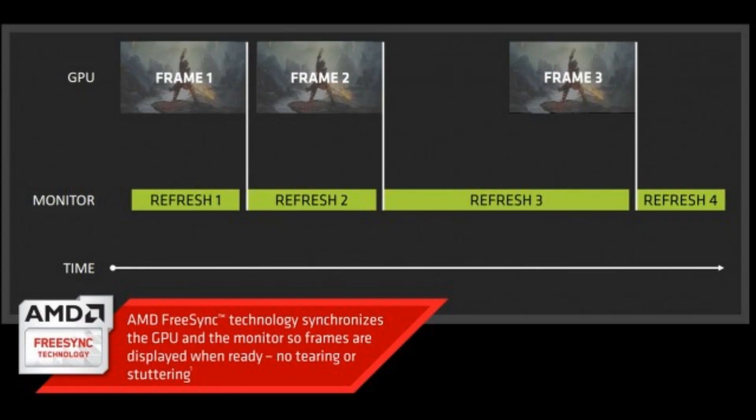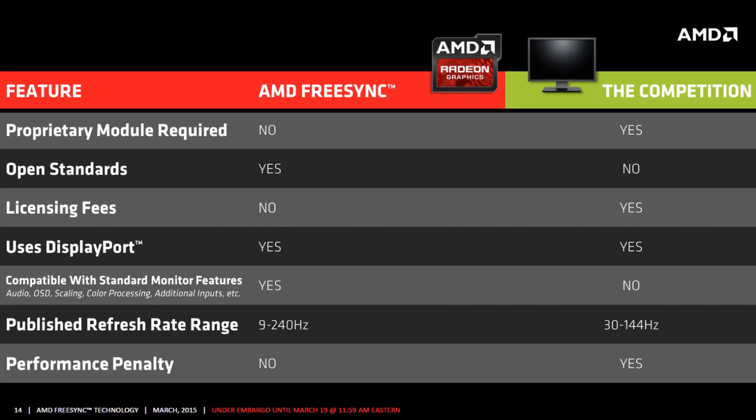FreeSync achieves the same thing by letting the GPU control when the monitor is to refresh, but it goes about it in a different way. FreeSync is based on the Adaptive Sync open standard in DisplayPort 1.2a and later versions, in addition to the integrated display controller inside AMD's graphics processors. This means the AMD graphics card handles it itself, whereas G-Sync has to go through that proprietary chip.